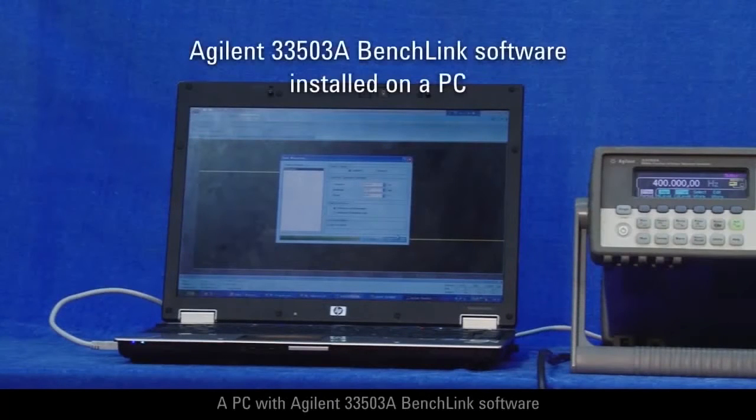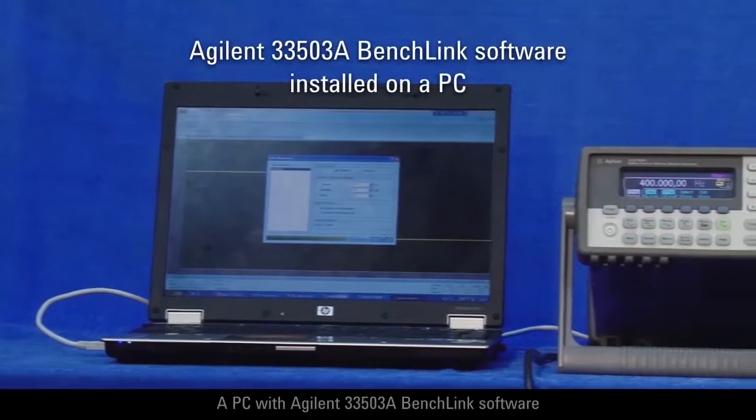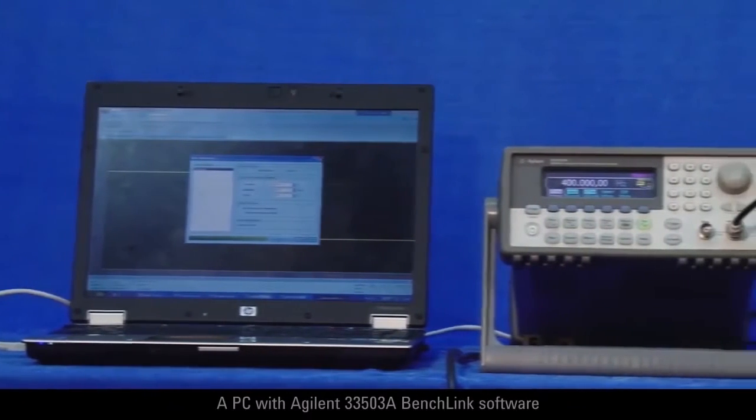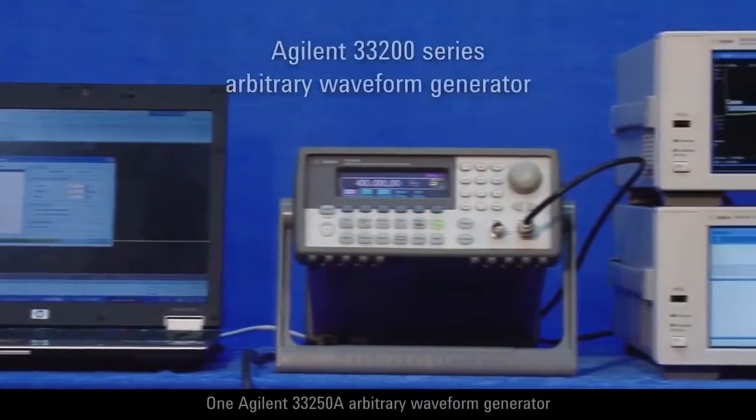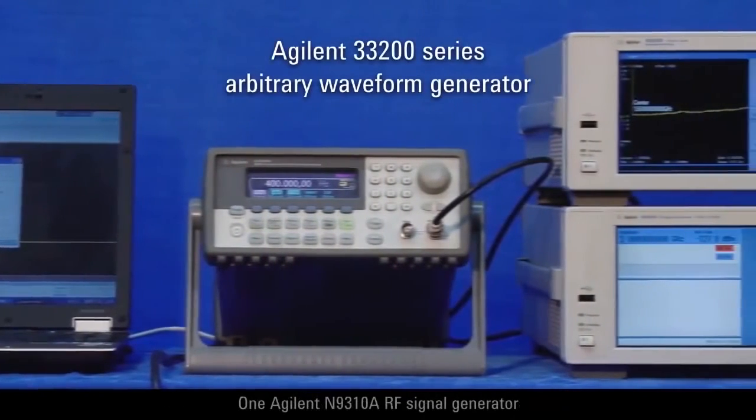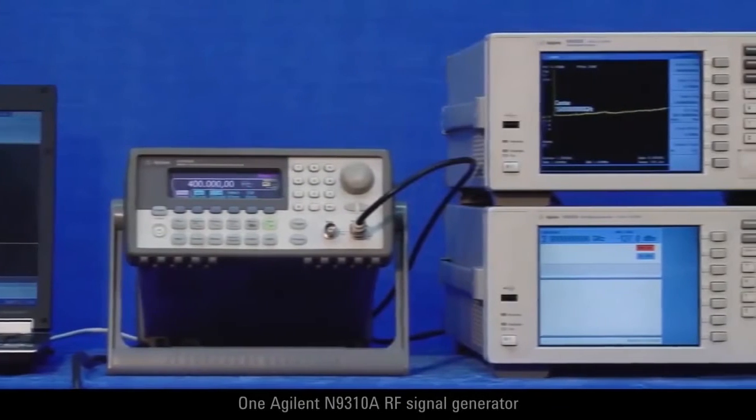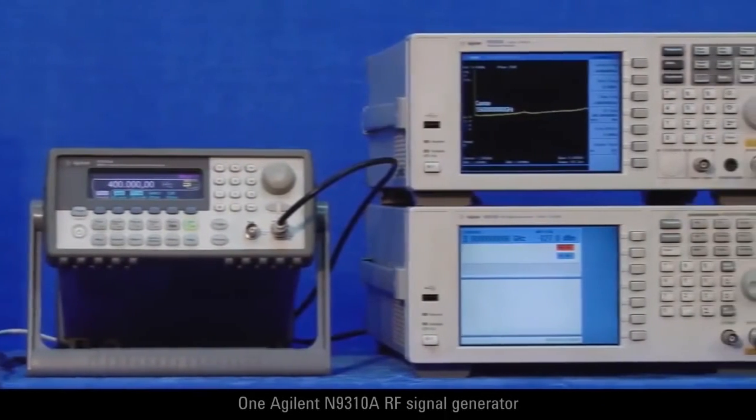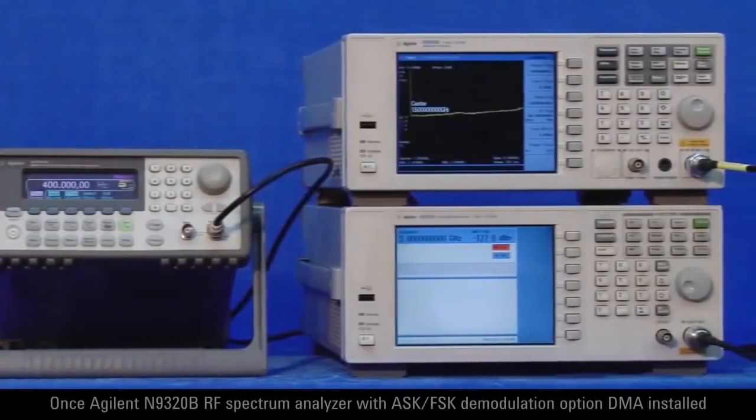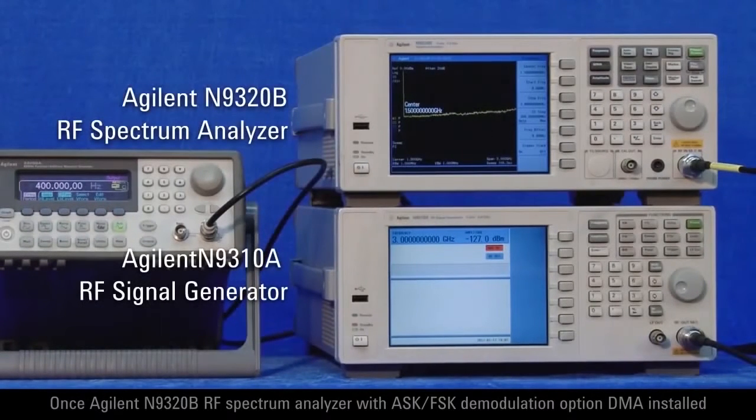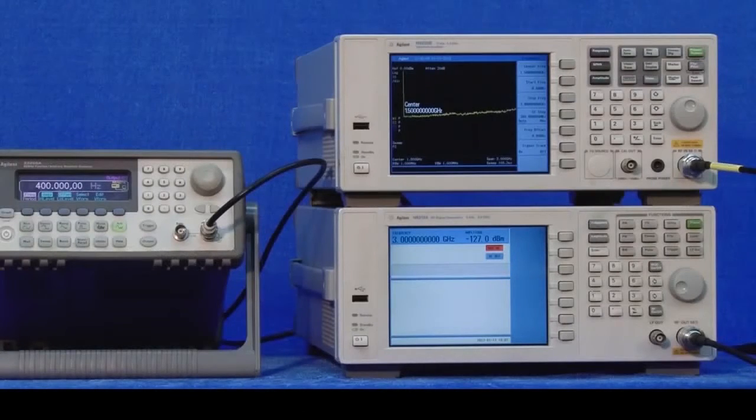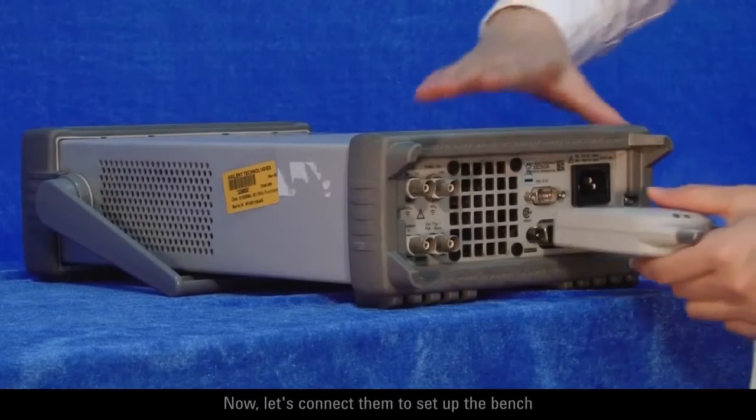In this demonstration, we will use a PC with Agilent 33503A BenchLink software, one Agilent 33250A arbitrary waveform generator, one Agilent N9310A RF signal generator, one Agilent N9320B RF spectrum analyzer with ASK-FSK demodulation option DMA installed. Now, let's connect them to set up the bench.